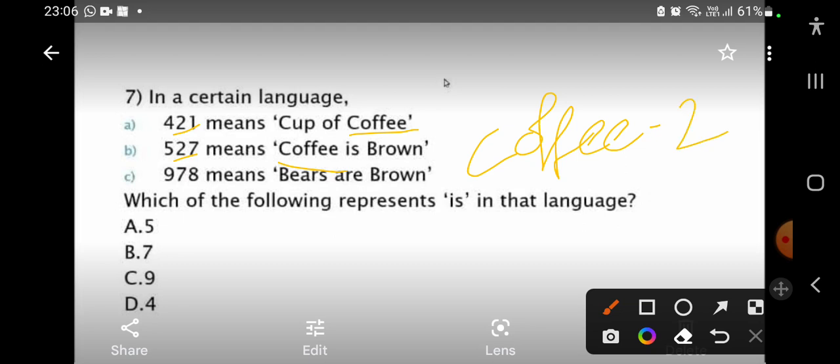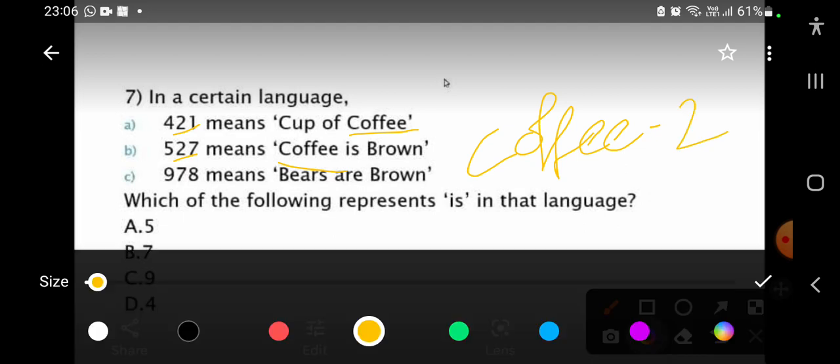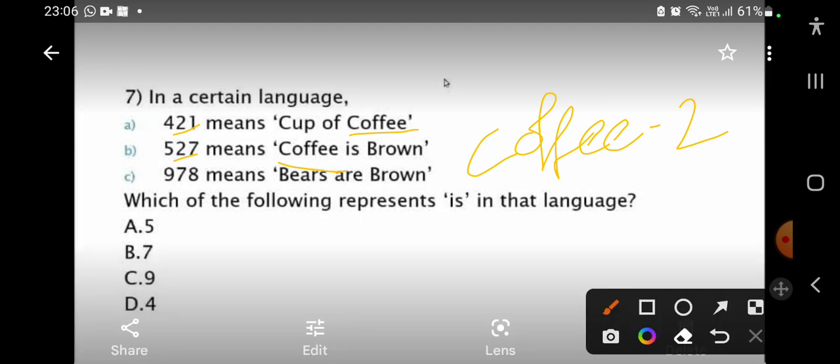Next, another similar words. Here brown is there, here also brown is there. Here 7 is there, here also 7 is there. So, 7 represents brown.